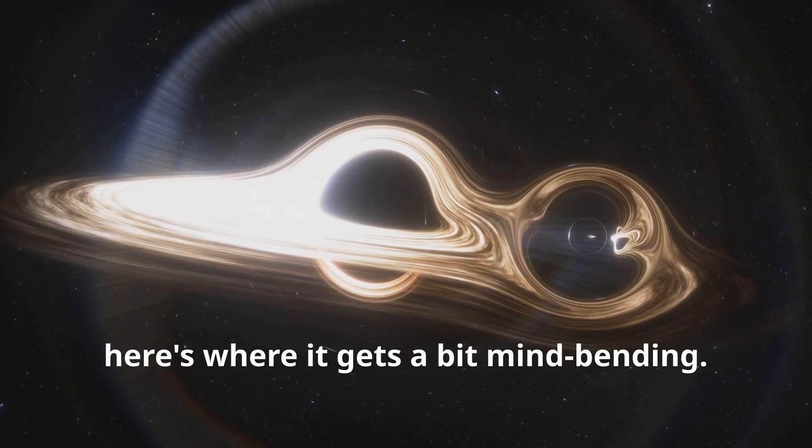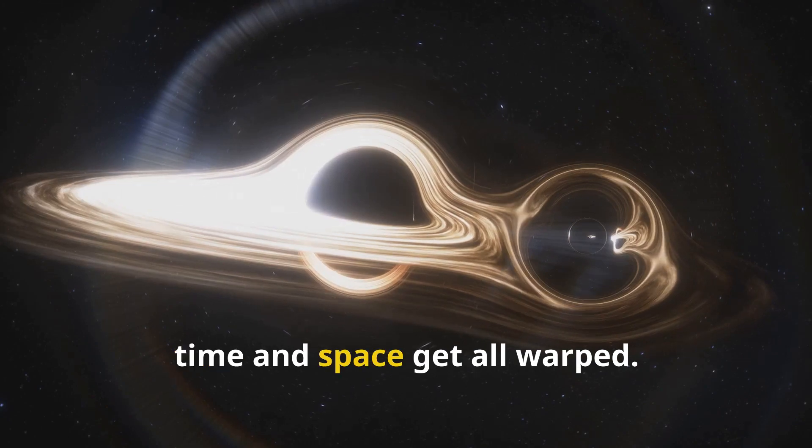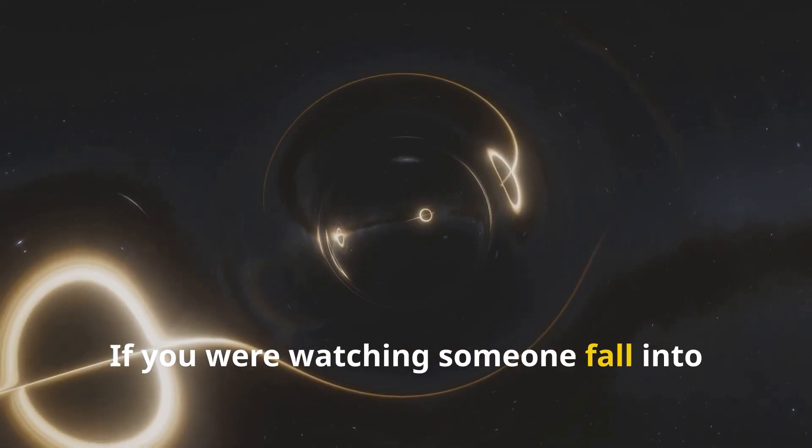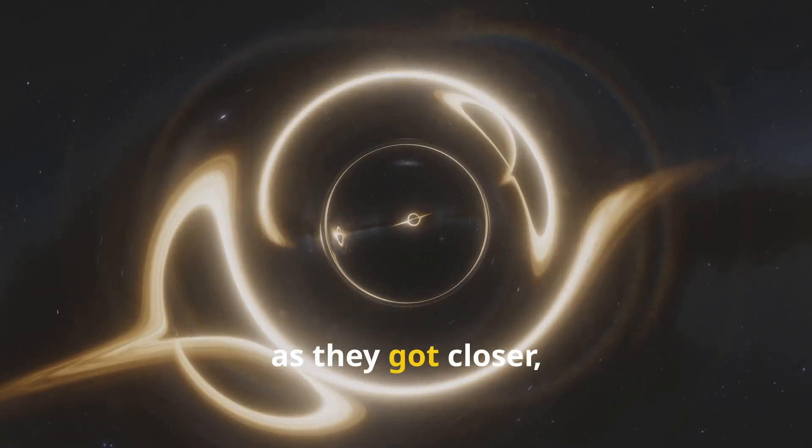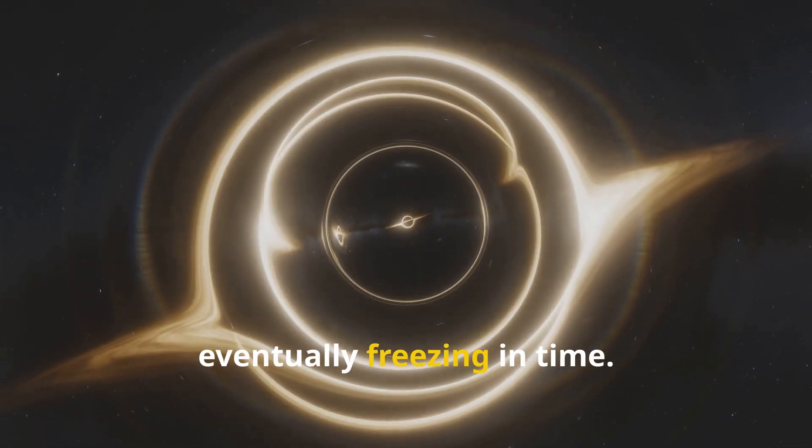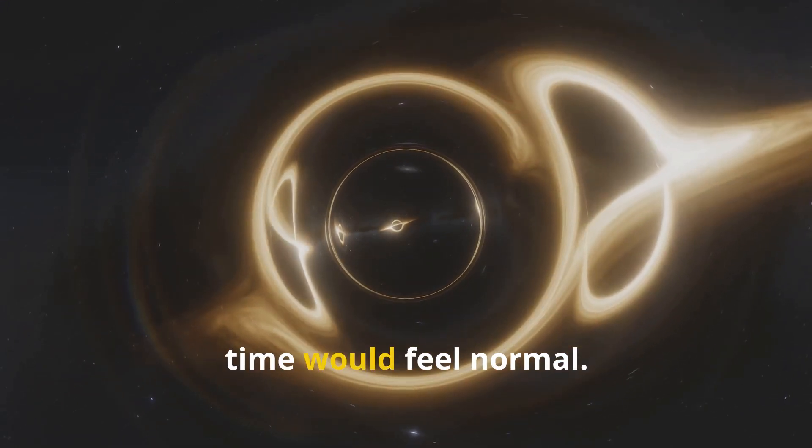Now here's where it gets a bit mind-bending. At the event horizon, time and space get all warped. If you were watching someone fall into the black hole, it would look like they were slowing down as they got closer, eventually freezing in time. But to the person falling in, time would feel normal.